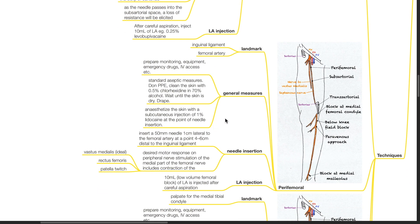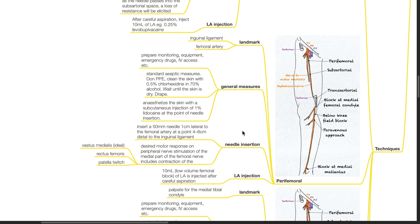Perifemoral approach: important landmarks include the inguinal ligament and femoral artery. Insert a 50 mm needle 1 cm lateral to the femoral arterial pulse at a point 4–6 cm distal to the inguinal ligament. The desired motor response on peripheral nerve stimulation of the medial femoral nerve includes contraction of the vastus medialis (ideal) or rectus femoris resulting in a patellar twitch. Inject 10 mL of LA after careful aspiration.